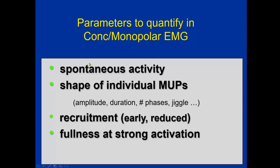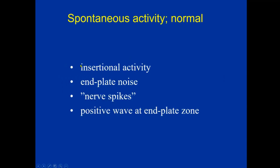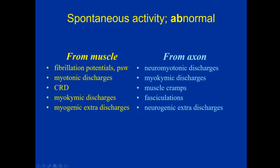When we do the EMG, we have three steps: one to look at spontaneous activity, one to look at the shape of motor unit potentials, and the third step is to look at the recruitment of motor units and their activity at full force. Spontaneous activity: we have normal spontaneous activity such as insertional activity, end plate noise, nerve spikes, and positive waves at the end plate zone. Abnormal spontaneous activity generated in the muscle includes fibrillation potentials, myotonic discharges, and complex repetitive discharges. From the axon: neuromyotonic discharges, myokymic discharges, fasciculations, and neurogenic extra discharges.